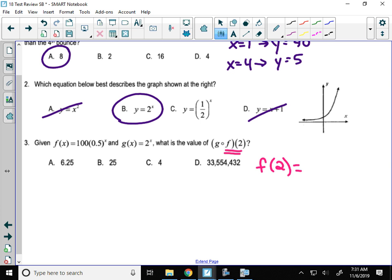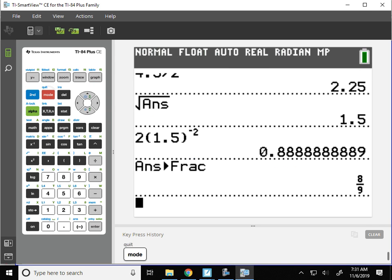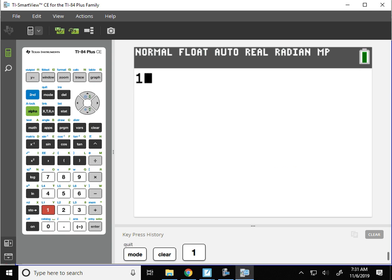So I'll put 2 in for x in the function f, which would be 100 times 0.5 to the 2nd. You can use your calculator here. 100 times 0.5 squared. And f(2) is 25.